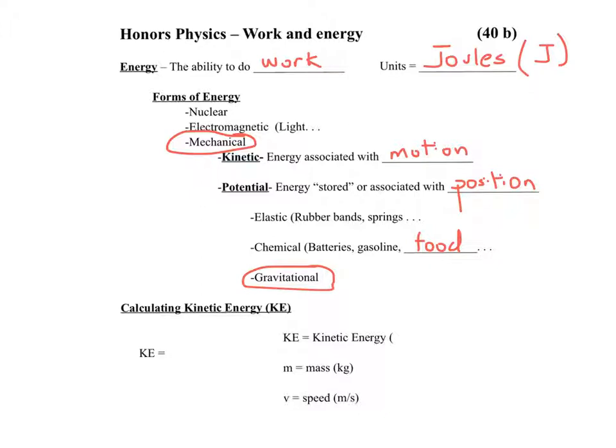Let's take a look at kinetic energy mathematically for a second here. The equation, without proving it, for kinetic energy is one-half mv, that's a v, squared. So KE stands for kinetic energy, energy due to the motion of an object. Its units are joules.